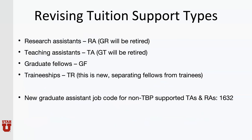We will be revising support types. To help streamline the program, we will be combining all research assistants under the research assistant designation, or RA. The current GR job code will be retired, so all research assistants, whether their payroll comes on a research project or an activity, will be on the RA job code. This also means that you can have split distributions of payroll between a research grant and an activity. Teaching assistants will all be consolidated under the TA job code. The GT job code will be retired. GT was associated with the international teaching assistantship program, but that will now be managed outside of the GT job code.